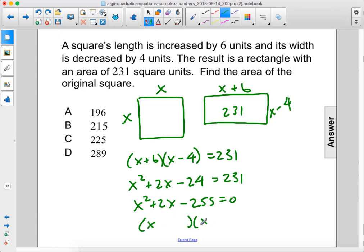We'll factor this and we get x plus 17 times x minus 15. Therefore, our solutions are going to be x equals negative 17 or positive 15. We can discard the negative result and our solution is 15.